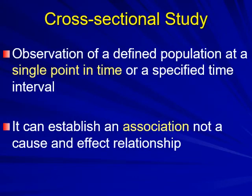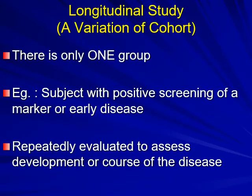A cross-sectional study is the observation of a defined population at a single point in time or a specific time interval. It can only establish an association, but not a cause-and-effect relationship — only association. It doesn't give you any idea about a cause-and-effect relationship.